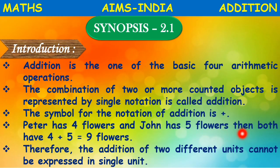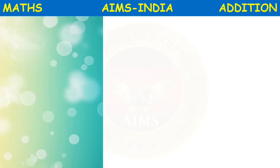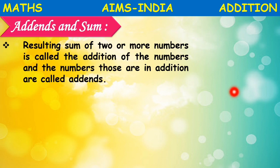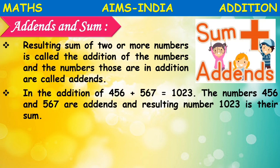Four plus five equals nine flowers. The addition of two different units cannot be expressed in a single unit. Addition is the combination of two or more counted objects. The resulting sum of two or more numbers is called the addition of numbers.